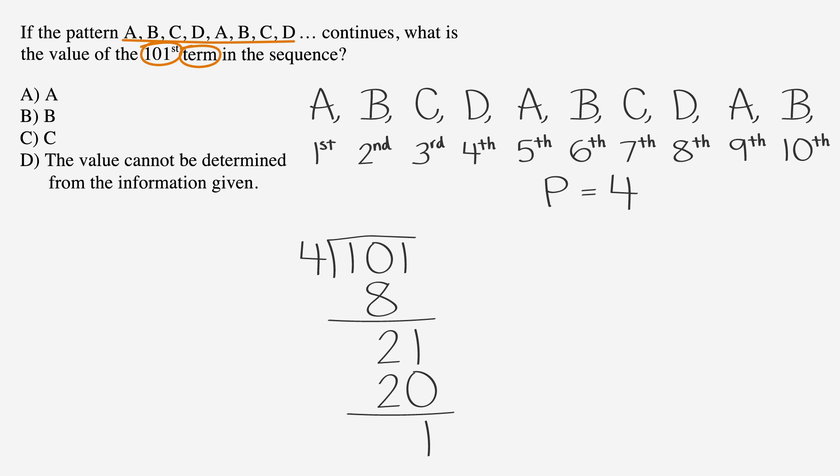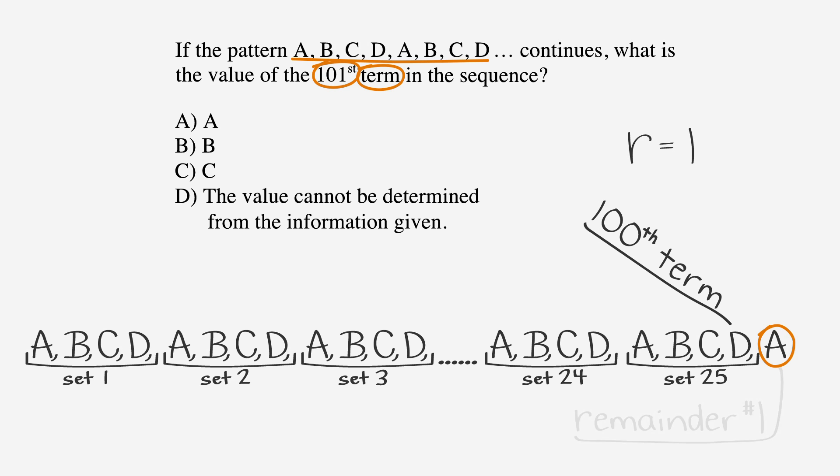Four goes into 101 25 times and gives us a remainder of one. We've got our answer, one, but we're looking for which term, between A through D, would be the 101st term in the pattern given. Since our remainder is one, the 101st term must be the first term in the pattern, which is A. Looking at the answer choices, we can circle answer choice A.